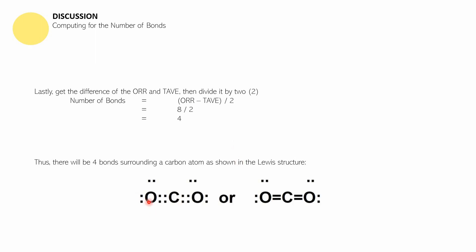The last step is to get the difference of ORR and TAVE, then divide by two. So: (24 − 16) ÷ 2 = 4. Therefore there will be four bonds surrounding the carbon atom, as shown in the Lewis structure. The four bonds are present — one, two, three, four — and each bond is comprised of two valence electrons.